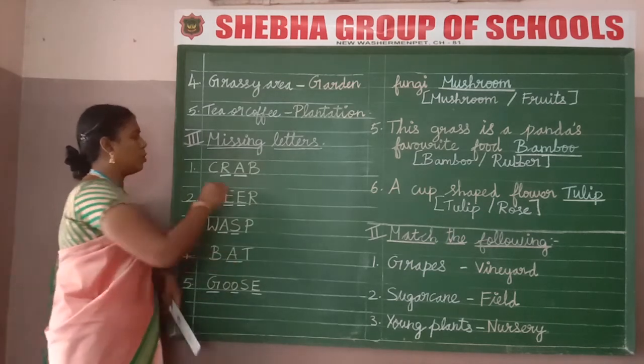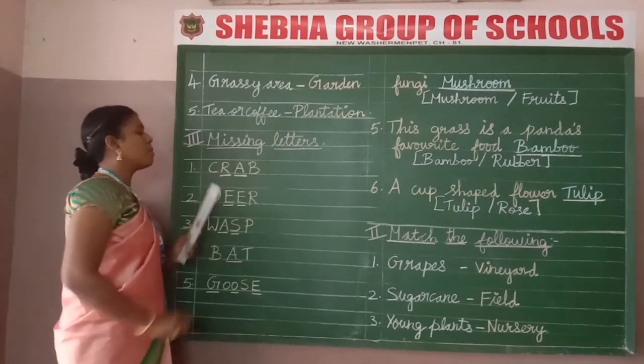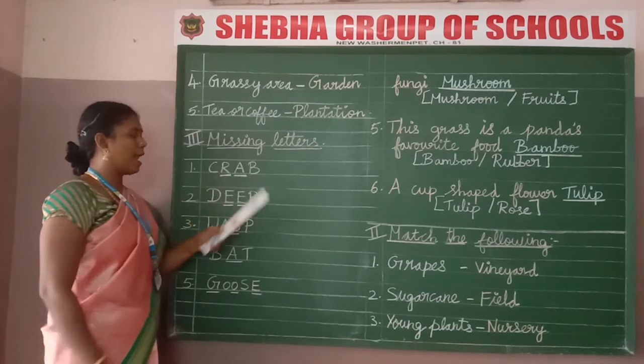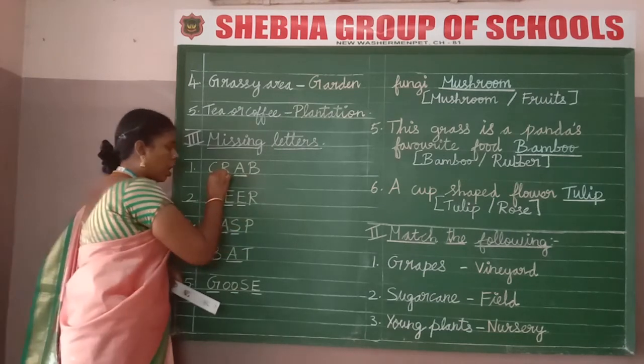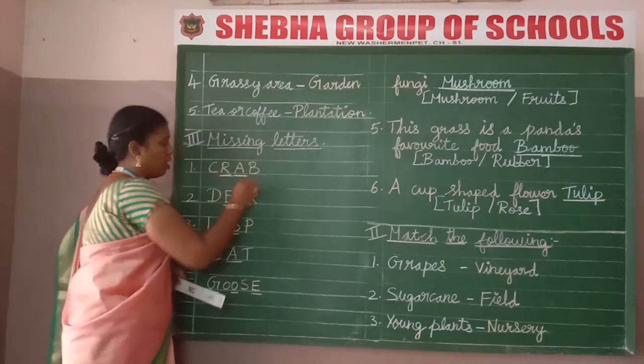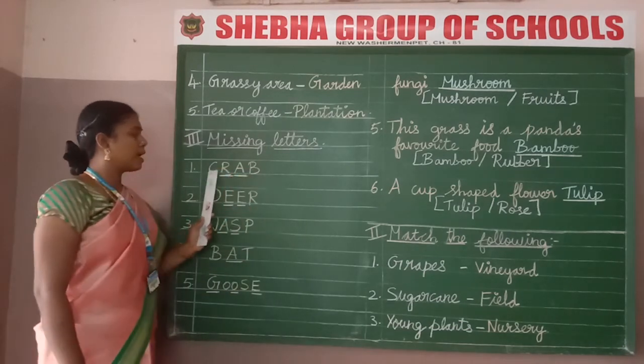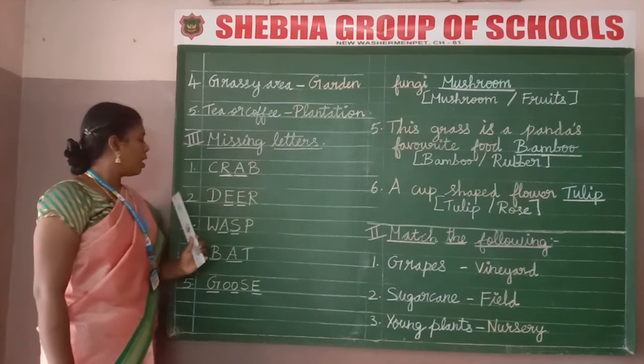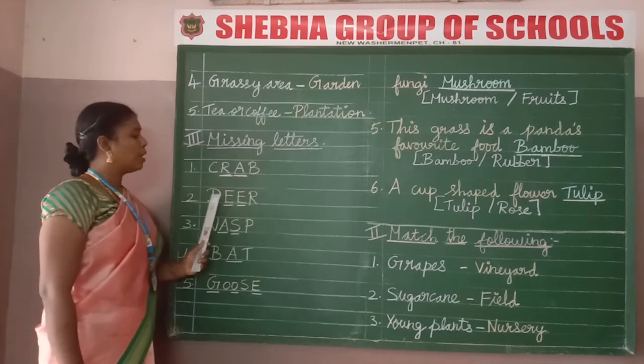Let me read the missing letters once more. Crab: C-R-A-B — the dash letters given are R-A. Deer: D-E-E-R. Wasp: W-A-S-P. Bat: B-A-T. Goose: G-O-O-S-E.